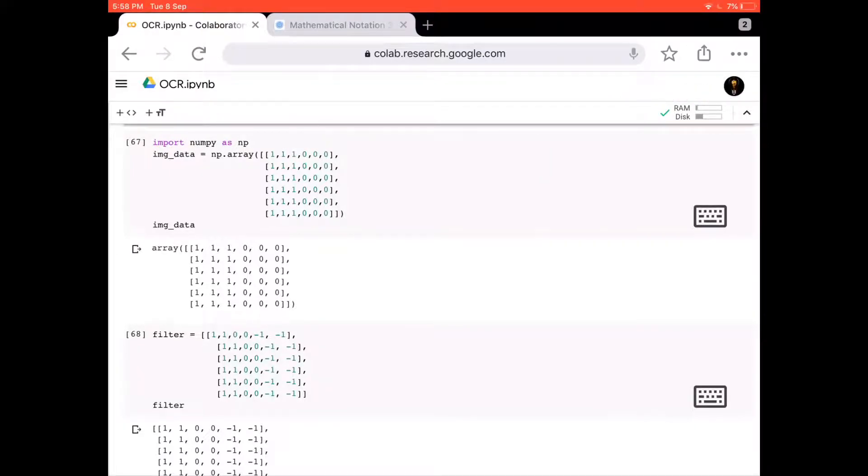Then I have another filter, or another matrix B. Here I'm calling it a filter, and it also has 6 by 6 values, basically 36 elements all belonging to real numbers. The values are 1, 1, 0, 0, minus 1, and minus 1.